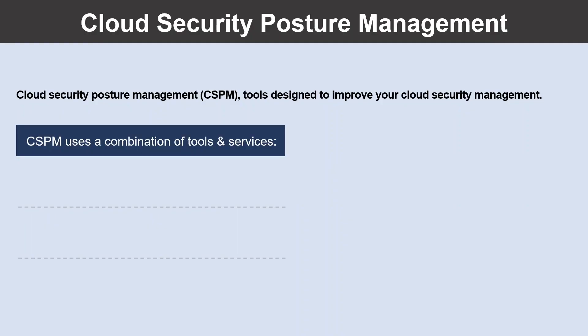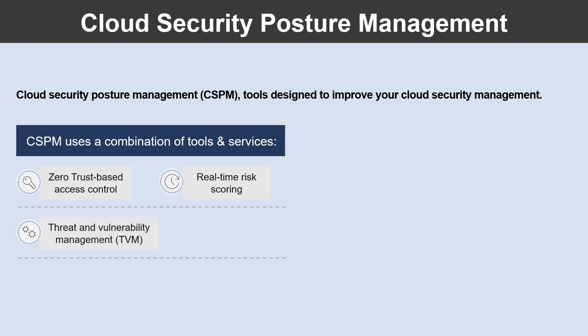Cloud Security Posture Management uses a combination of tools and services. The first one is zero-trust-based access control, which considers the active threat level during access control decisions. Another tool or service is real-time risk scoring, which provides visibility into top risks. The next one is TVM, or Threat and Vulnerability Management, which establishes a holistic view of the organization's attack surface and integrates it into operations and engineering decision-making.